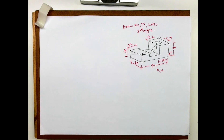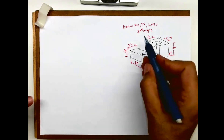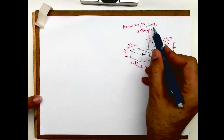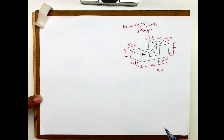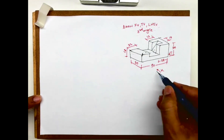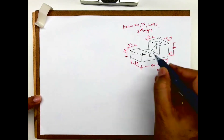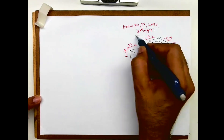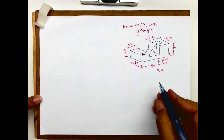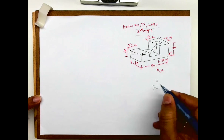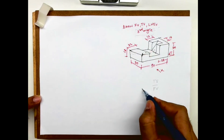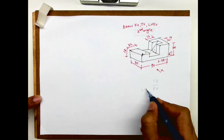Welcome to technical drawing. Today we'll see this problem in orthographic — we have to draw front view, top view, and left-hand side view in third angle. The observer is watching from the front. In third angle, the top view comes up, front view comes down, and the left-hand side view comes on the left side.